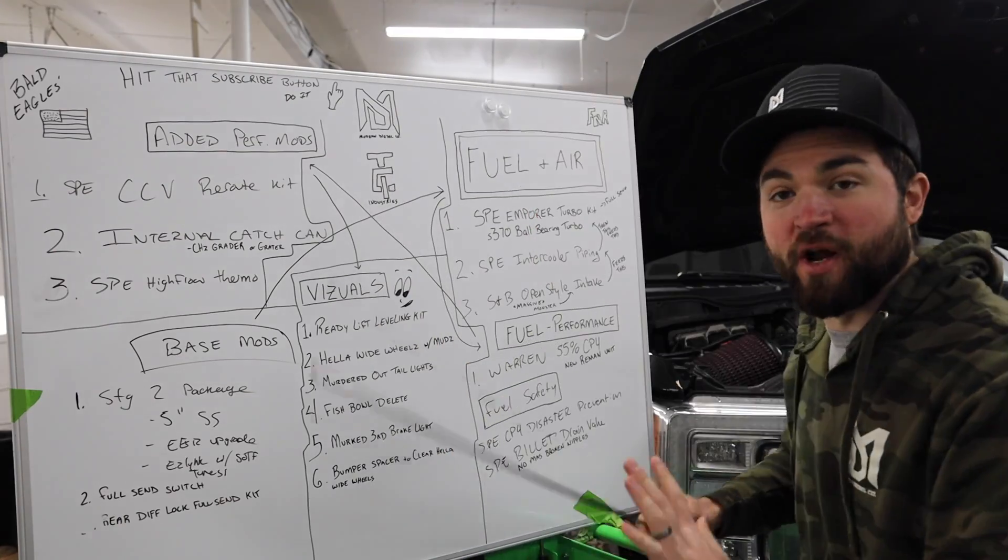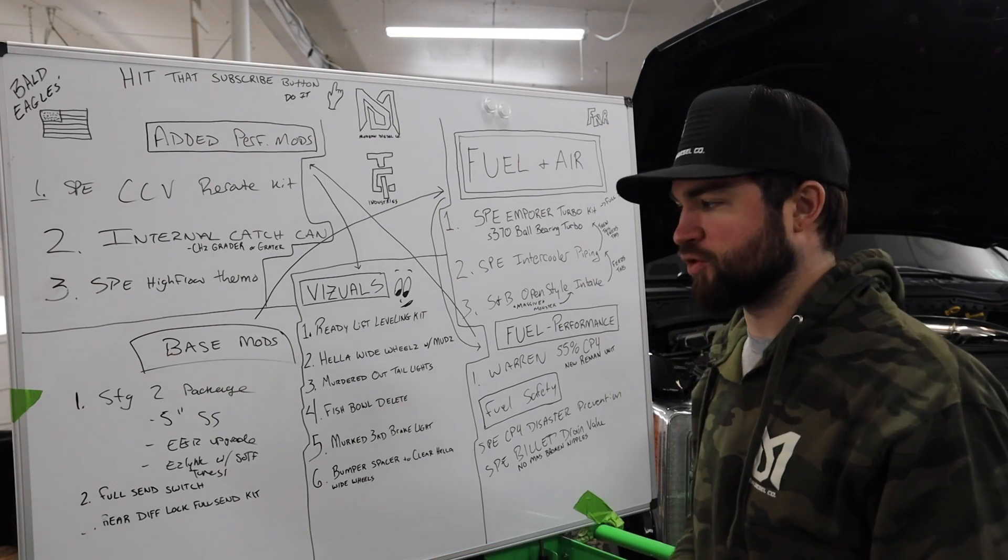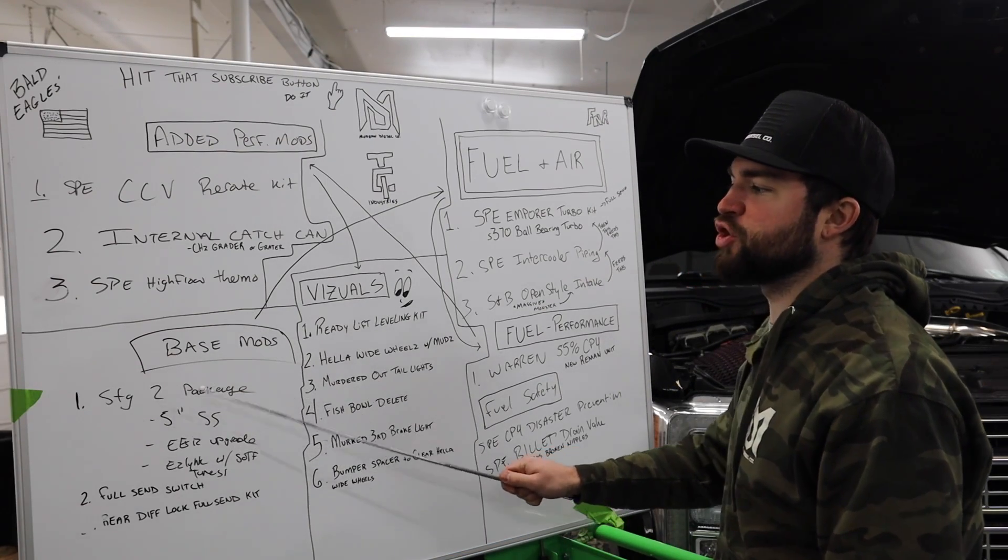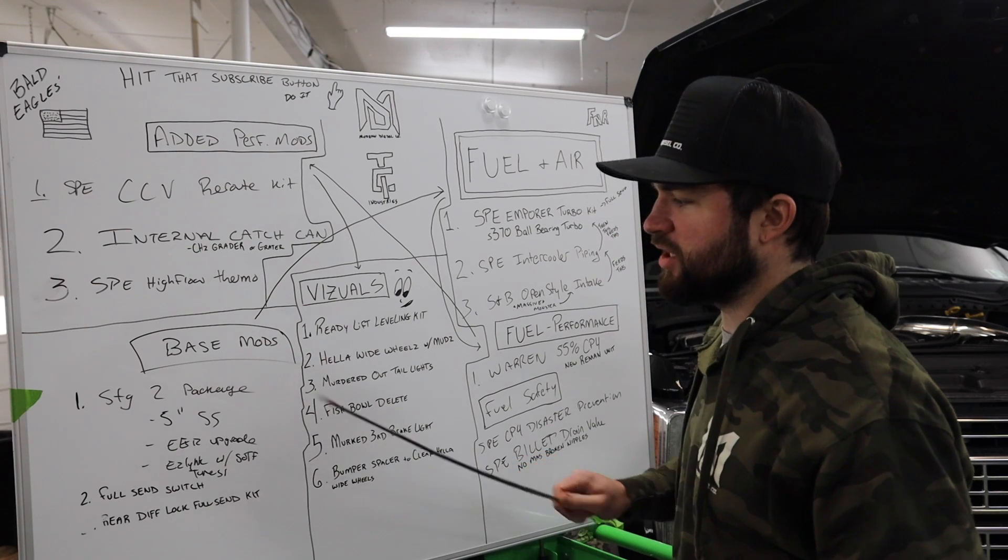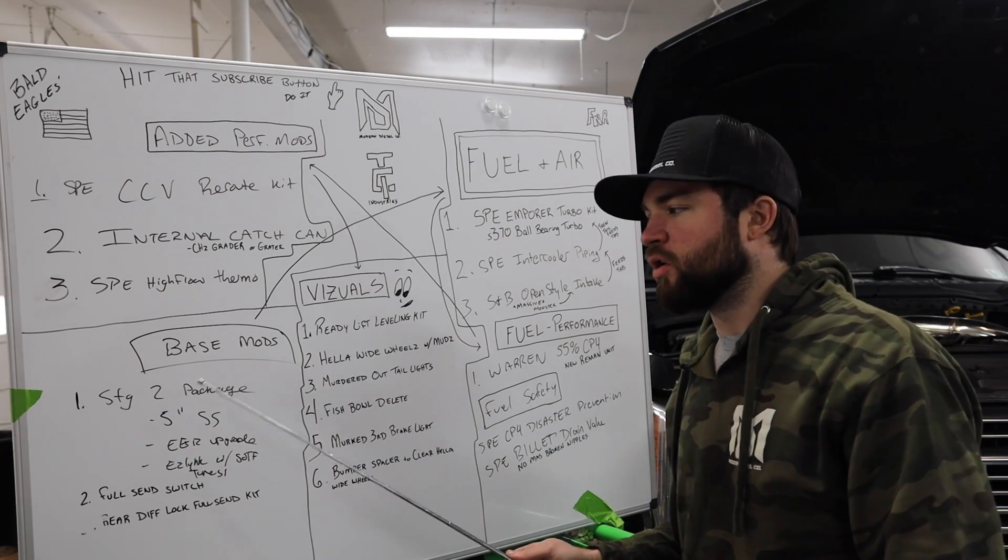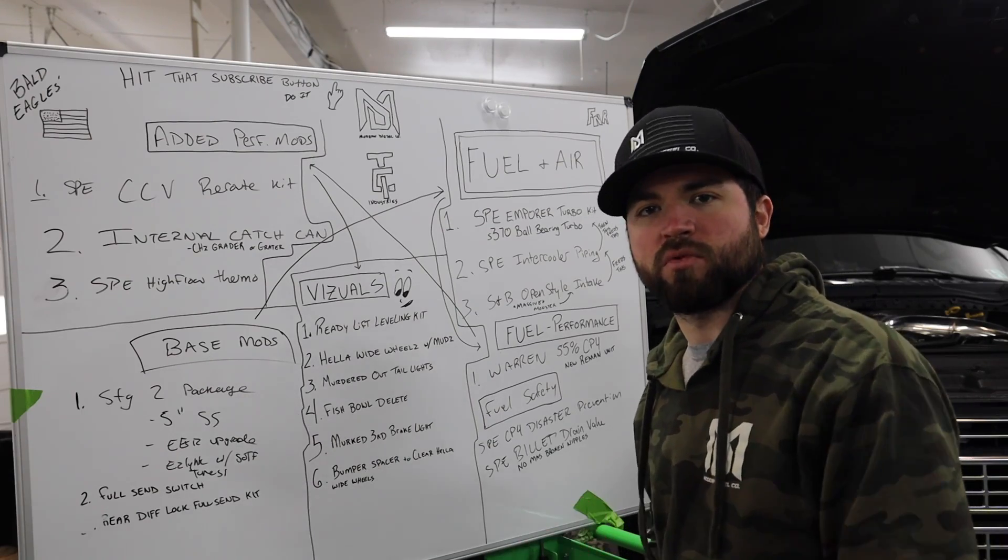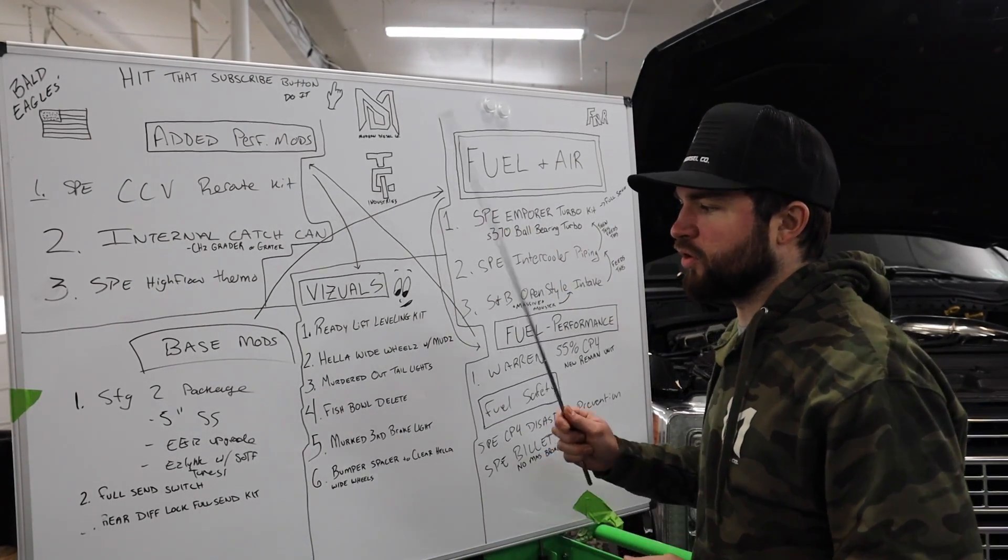So anyways, we're going to start base mods. This is the base, base stuff that I have done to the truck. Base mods I'm running are stage two package. Now that includes a five-inch stainless steel exhaust, EGR upgrade in the EZ Link with the shift-on-the-fly switch and everything necessary to run that. Okay, so stage two kit out of the way, very first thing needed. Stage two kit.